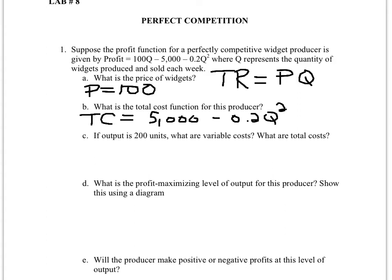Now if I put in q=200, what are the variable costs? The variable costs are the part of the cost equation that actually changes with output, so that will be 0.2q². In this case, variable costs will be equal to 0.2 times 200 to the power of 2.